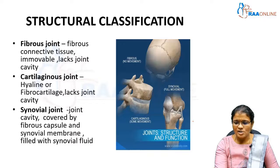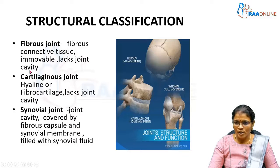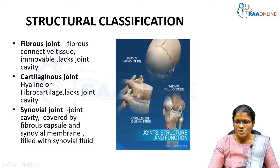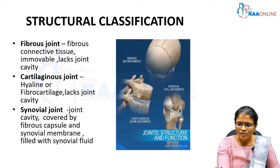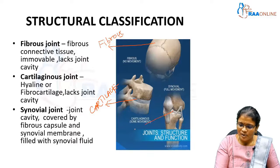Structural classification is based on the type of connective tissue present between two bones. If fibrous connective tissue is present between two skull bones, it is called a fibrous joint — usually immobile and lacking a joint cavity. A cartilaginous joint has hyaline cartilage or fibrocartilage between the two bones and also lacks a joint cavity. A synovial joint has a joint cavity covered by a fibrous capsule, and the cavity is filled with synovial fluid.